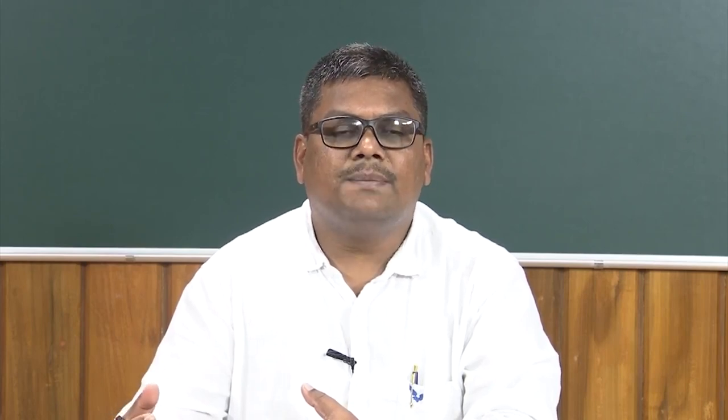Language, like any other information transferred from one person to another, is first taken in as raw input and transformed. The basic components of language are first perceived through a language processing unit in the brain, and the raw parts of the language are then processed to form meaningful representations that have semantic value. Let us look at the steps involved in taking raw language input and creating a semantically meaningful representation.